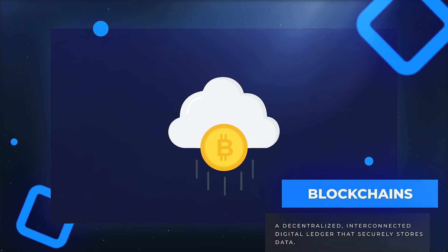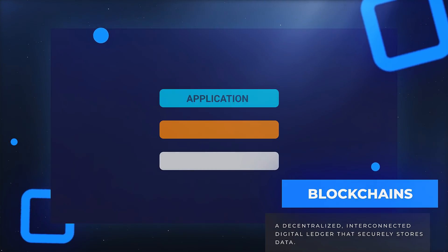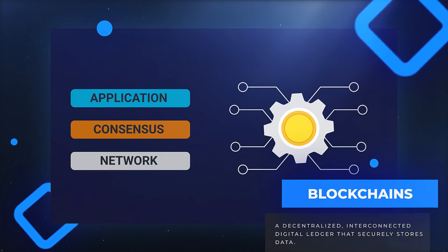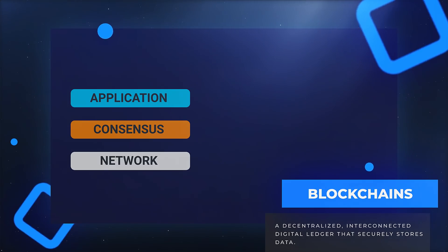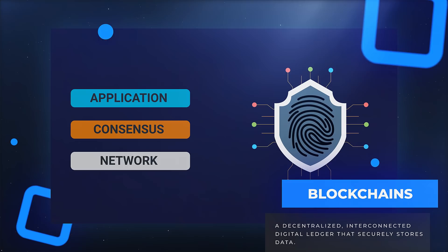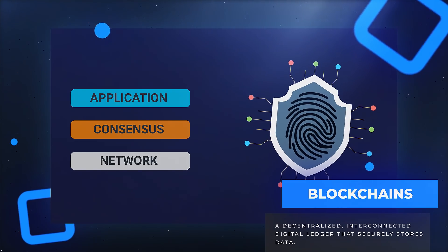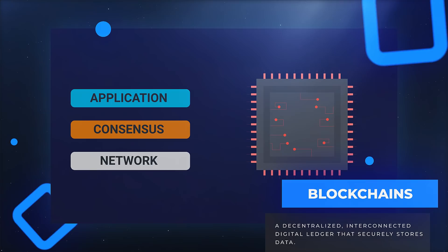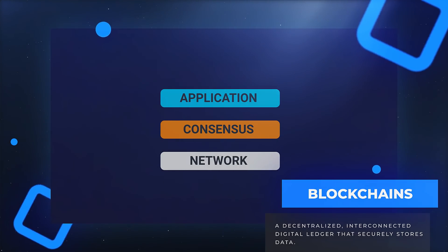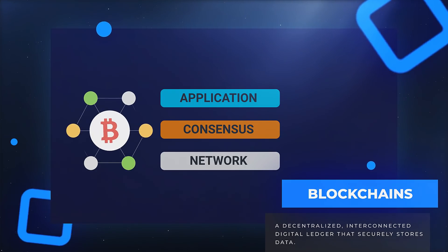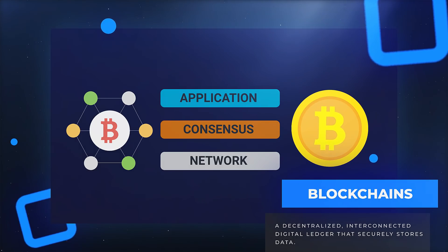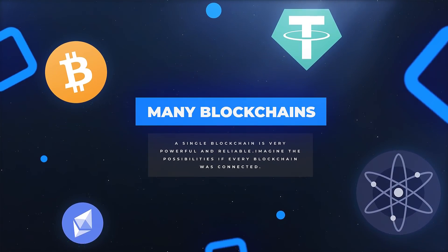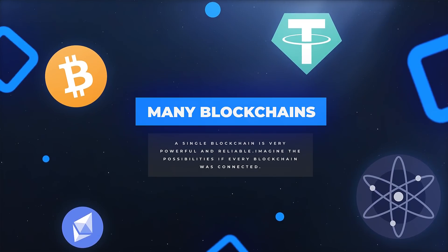A blockchain has three main layers: the application, consensus, and network layers. The networking layer is responsible for how blockchain nodes communicate with each other. The consensus layer is responsible for validating and consenting to changes made to data stored in a blockchain. The application layer contains the instructions and algorithms that define the blockchain's behavior. For example, in the Bitcoin chain, the consensus and network layers make up the core of the chain, while the application layer holds the instructions for how transactions are processed.